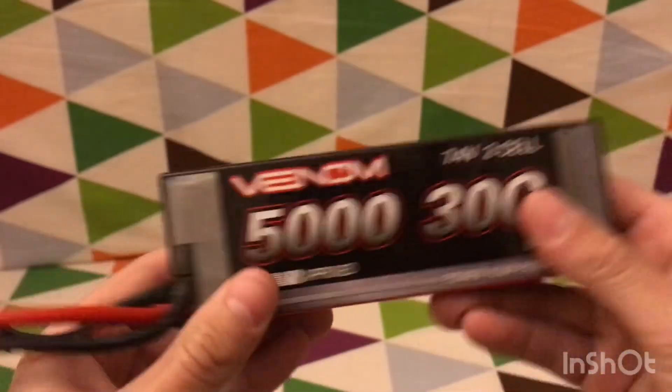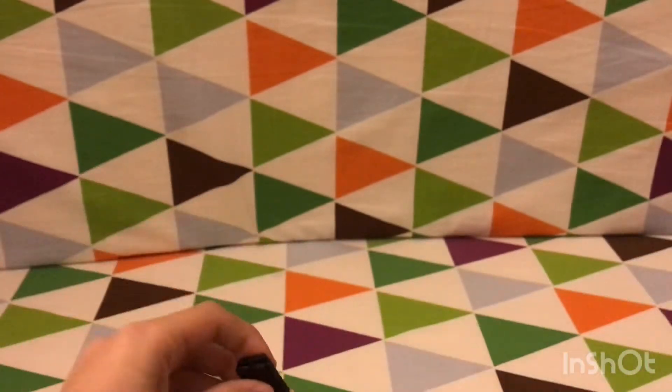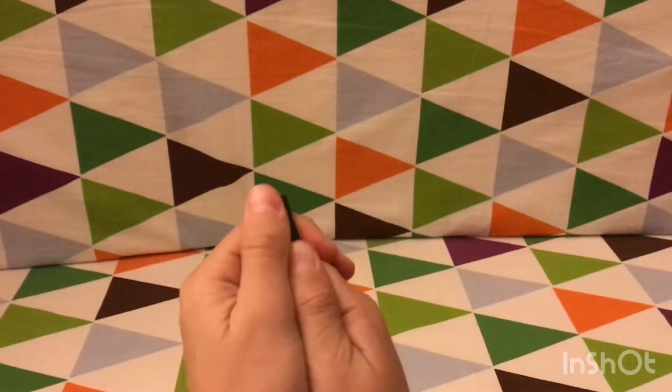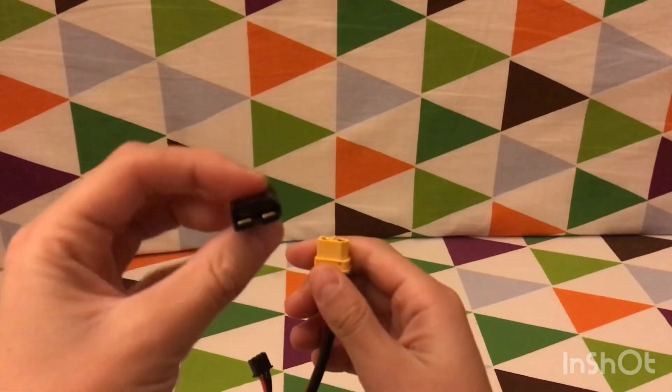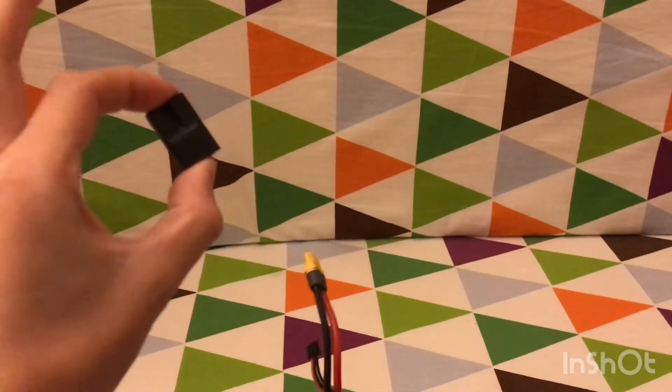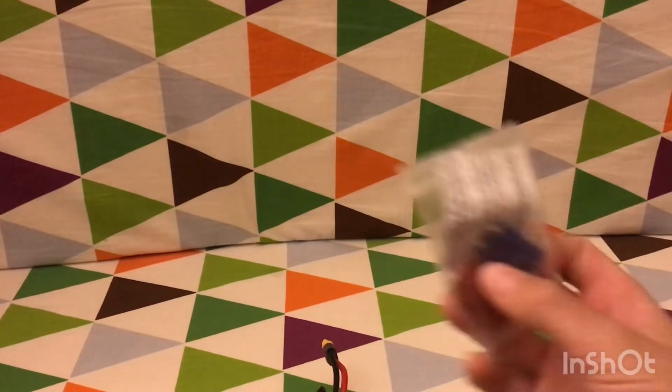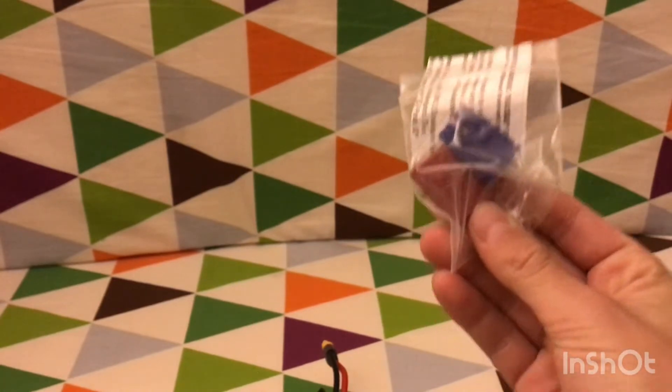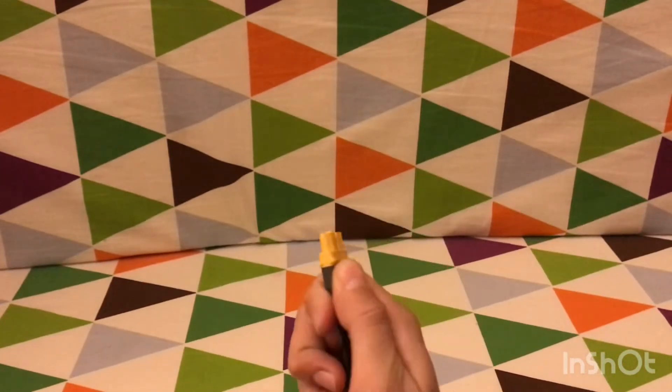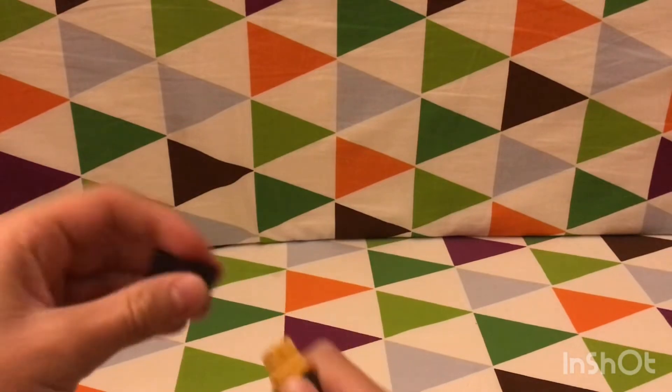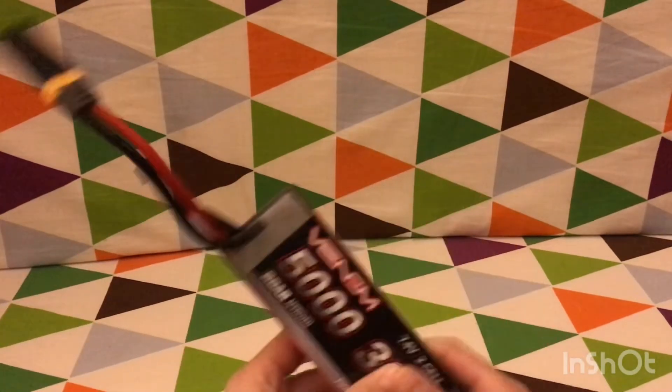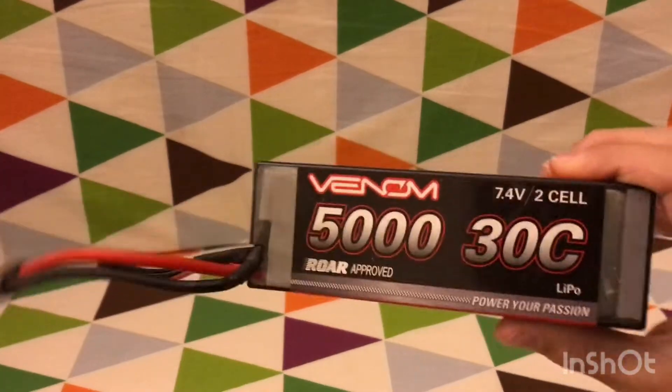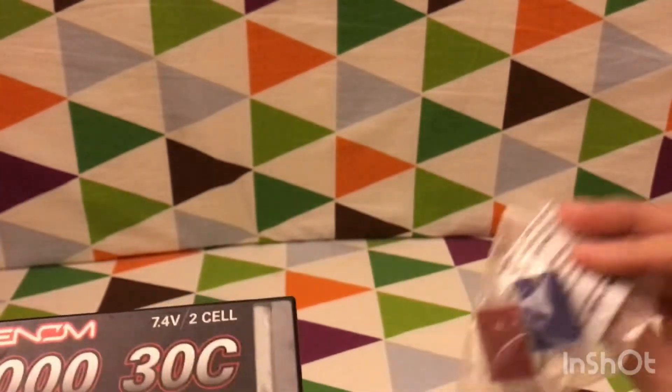A really solid plus about this Venom battery is that it comes with this adapter right here. So I use a Traxxas charger, but it comes with this in this bag, and it comes with, I think it's like EC3 or something, and also a Dean's adapter in there. So if you have a car that takes Dean's or EC3, then you can easily just slide it on here. You just take it like this, slide it on, and then you're done. So that is super nice about this Venom battery, because it comes with the adapters.